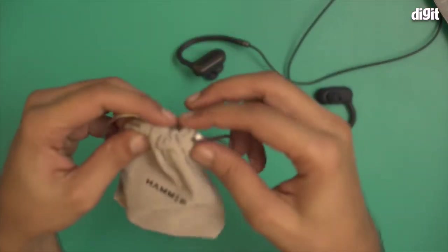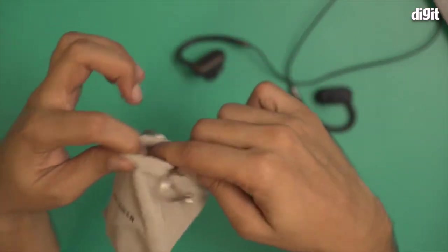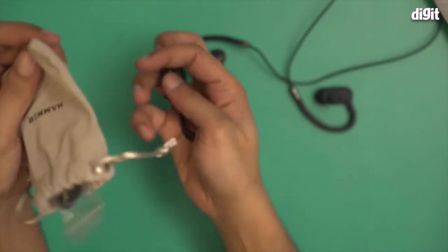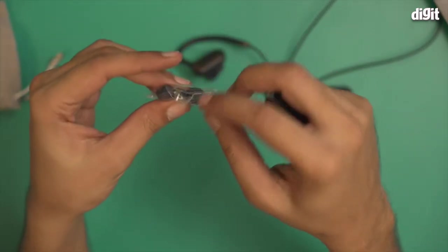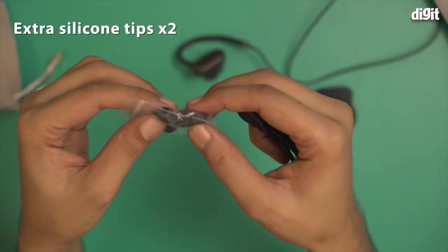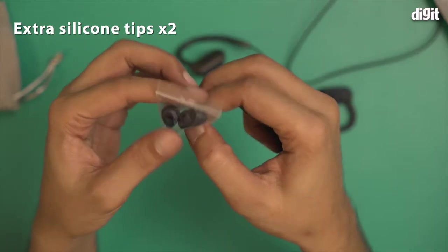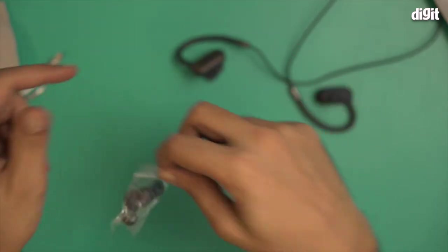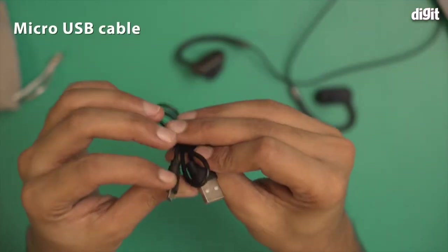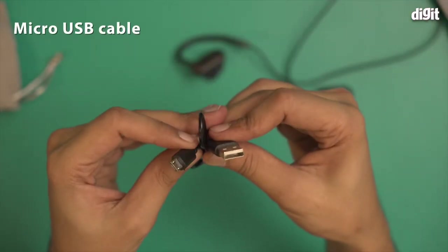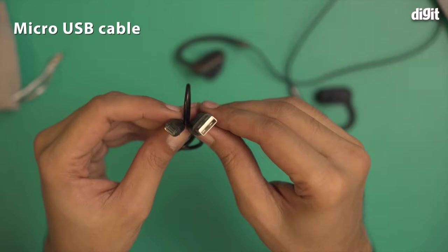There is a carrying pouch that comes in this box. Let's see what's inside. We have a packet of extra earbuds, these are the small and the large variants, and this is the micro USB charging cable for charging this particular set of earbuds.